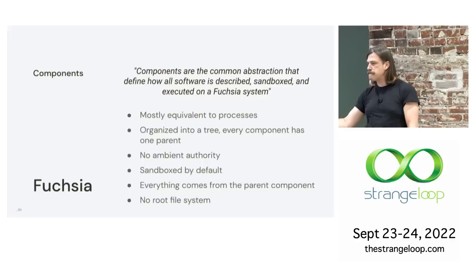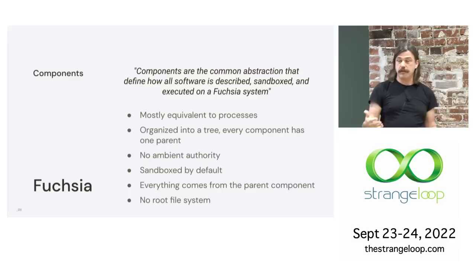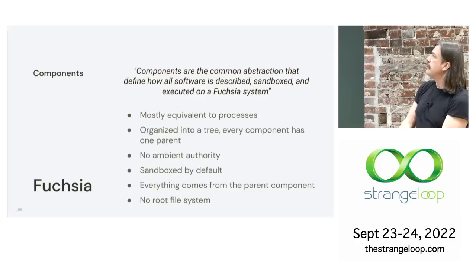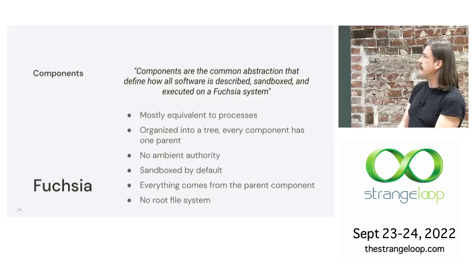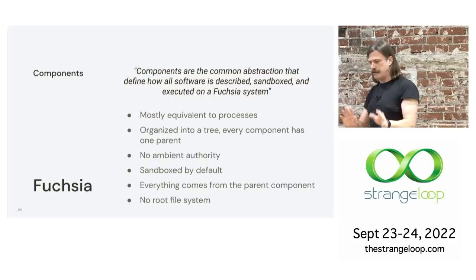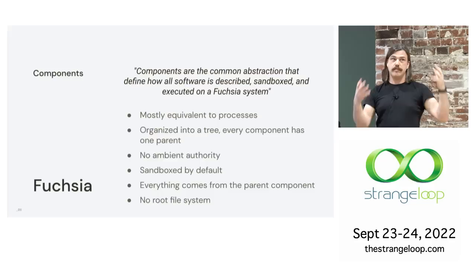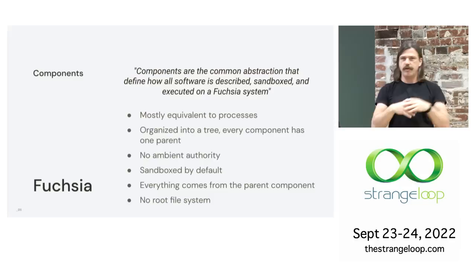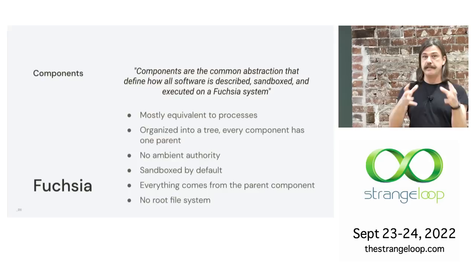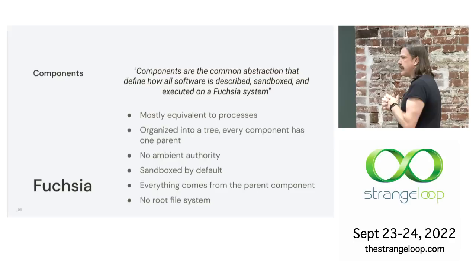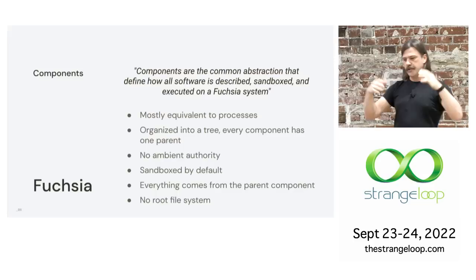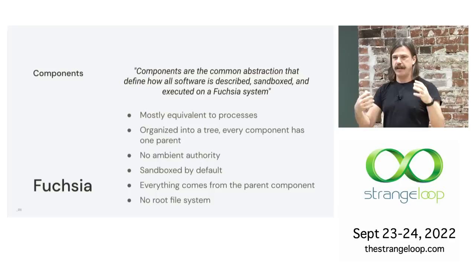We have an abstraction we call components. Components are the common abstraction that define how all software is described, sandboxed, and executed on a Fuchsia system. They're roughly equivalent to processes. They're organized into a hierarchy — every component has a parent. And they are sandboxed by default. There's no ambient authority. When you start a new component, it doesn't have access to files, the network, or the screen. It only has access to the things that its parent chooses to give it. This is kind of weird coming from a Unix background where you restrict access by taking things away. In the Fuchsia model, you decide how much access a component has by giving it things it's allowed to have.